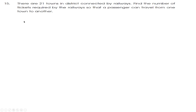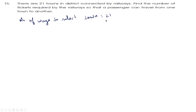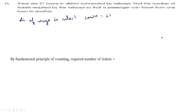Next question: we need to find the number of tickets required so that a passenger can travel from one town to another. If a passenger is in any one town, they can visit 20 other towns. By the Fundamental Principle of Multiplication, the required number of tickets is 21 into 20, equal to 420.